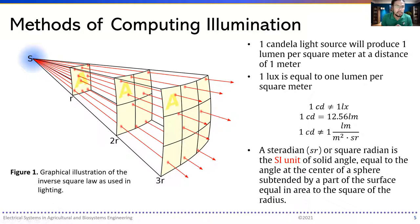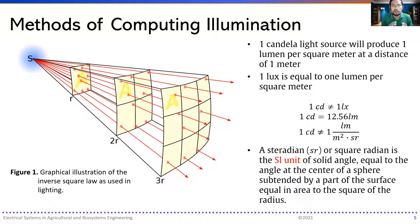One candela light source produces one lumen per square meter at a distance of one meter, and one lux equals one lumen per square meter — this justifies the point method. One candela equals one lux, and one candela equals 12.56 lumens. The steradian is the SI unit for solid angle, equal to the angle at the center of a sphere subtended by a surface area equal to the square of the radius.